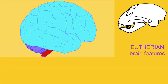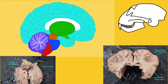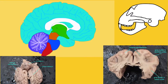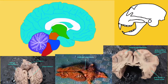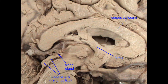Placental mammals expanded the cerebrum further, making it so large that the midbrain would no longer be exposed on the dorsal surface of the brain, but was covered by the cerebrum. Placental mammals also developed the corpus callosum, the band of axons which connects the two cerebral hemispheres across the midline.